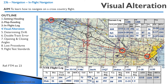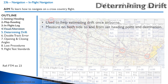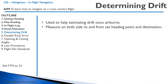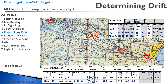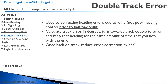We're going to head back to a landmark. If we want to determine drift once airborne, we have our 10-degree drift lines, so we can measure both from the set heading point and from the destination to figure out how much drift we have and what correction we need to get back on track.